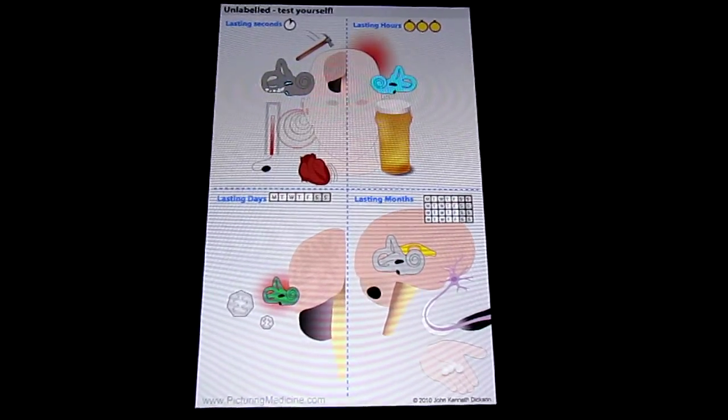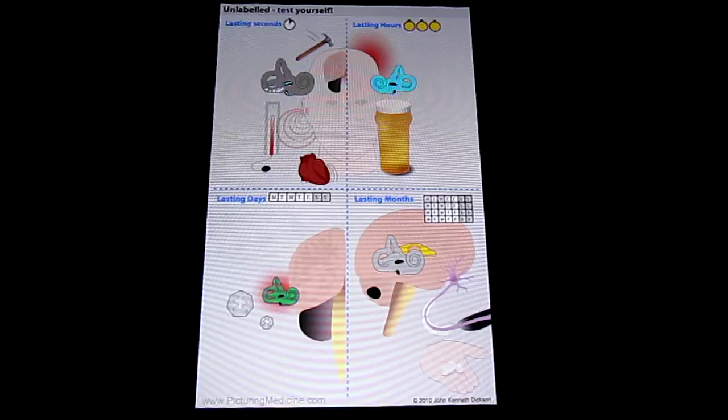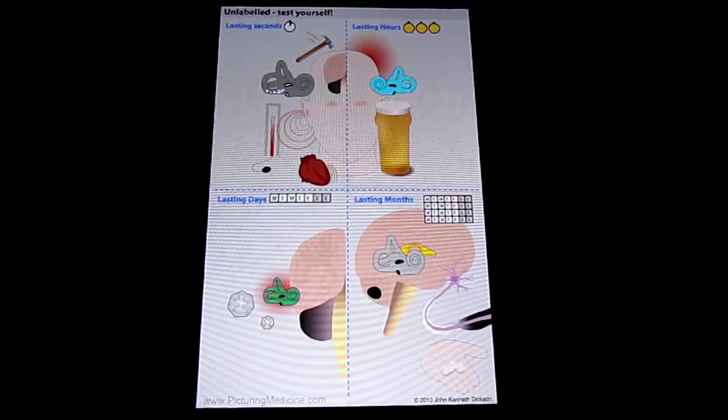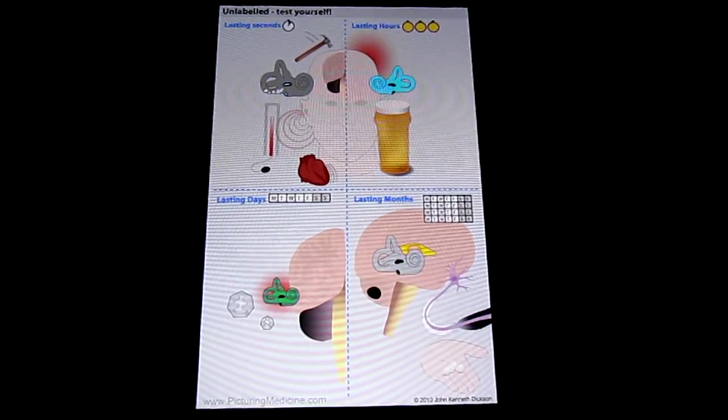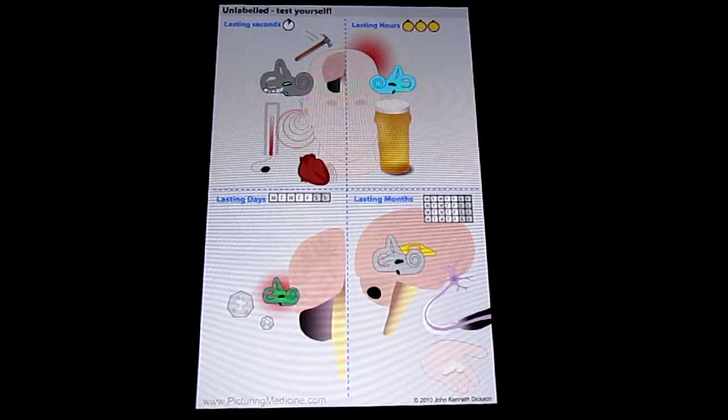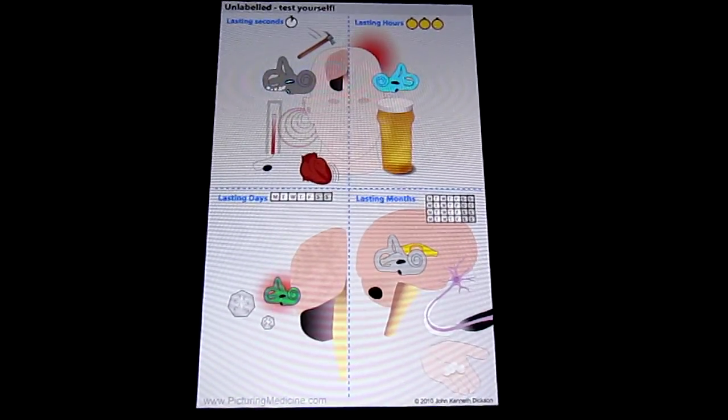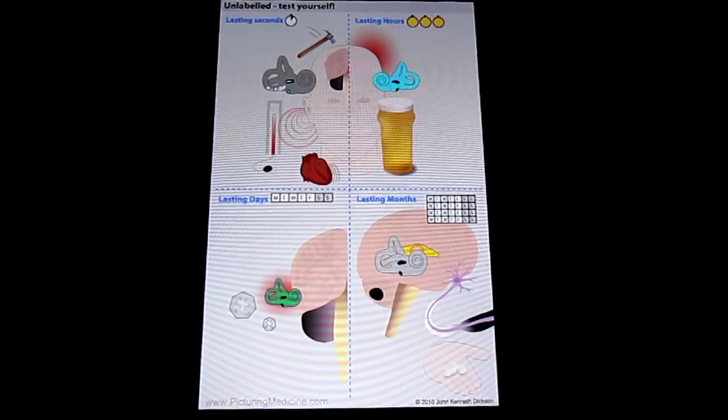Vertigo can be subclassified in relation to the duration of the vertigo, and that's how this diagram works. First of all, in the top left, we've got causes which last for just a few seconds.